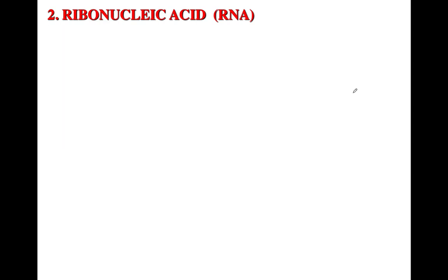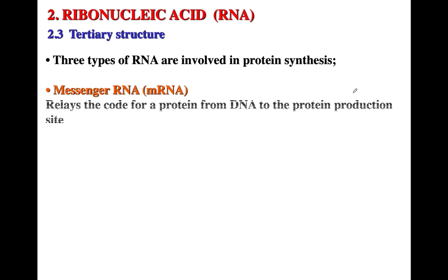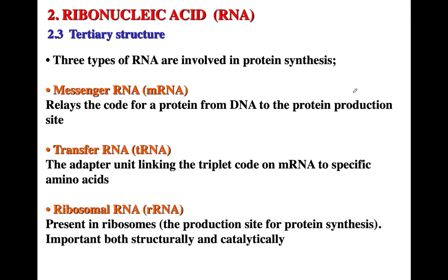Taking a closer look at ribonucleic acid: a tertiary structure can also be generated. There are three different types of RNA involved in protein synthesis, each with different tertiary structures: messenger RNA, transfer RNA, and ribosomal RNA.